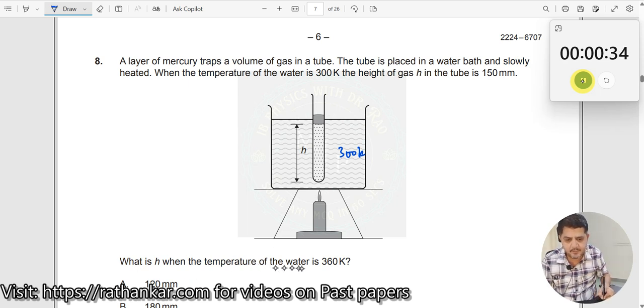What is H when temperature of water is 360 Kelvin? When it increases to 360 Kelvin, now what will happen? Temperature is higher. So therefore, this will come here and thus the height would be, this would be the total height. So you need to find out what is this total height.